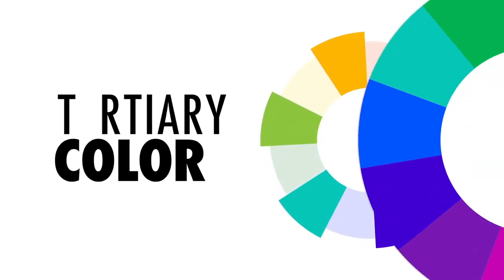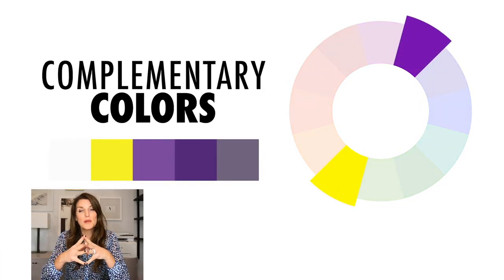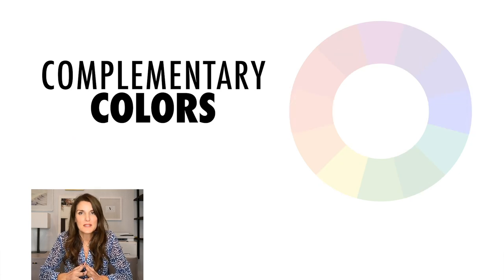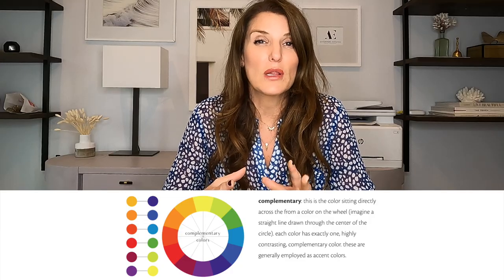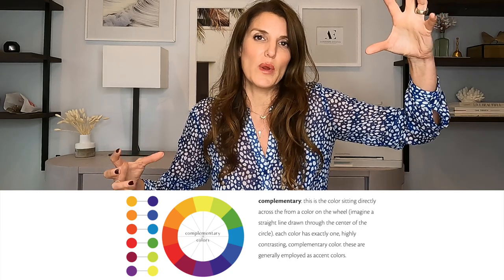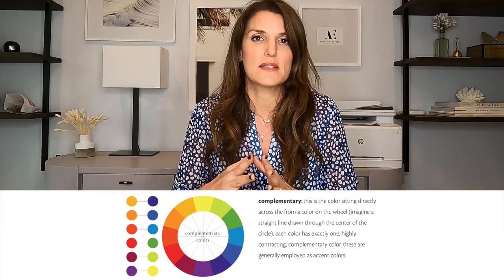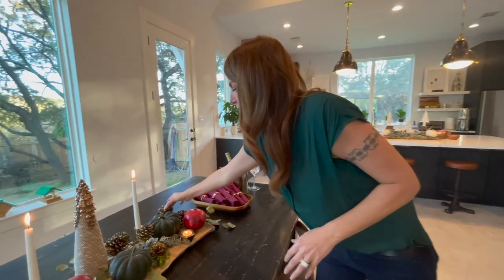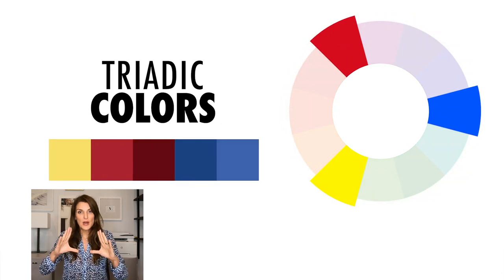Then we have the tertiary colors — that's when you take the secondary colors and mix those together, and there are six tertiary colors. Next we want to talk about complementary colors, which are colors that are opposites on the wheel. Complementary colors create impact — they give a space a 'wow' feeling. For example, orange and purple are opposites, so picture a room with muted versions of those; they'd create a lot of drama. Black and white create drama, green and red — think Christmas — creates a very strong impact.